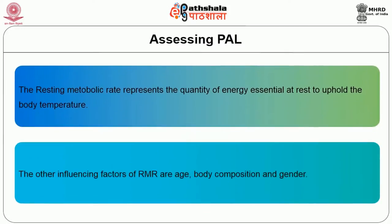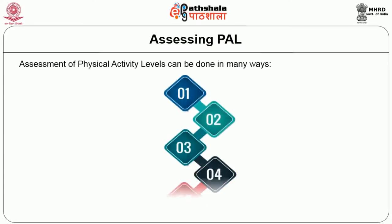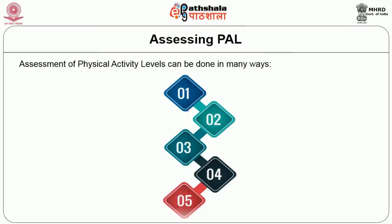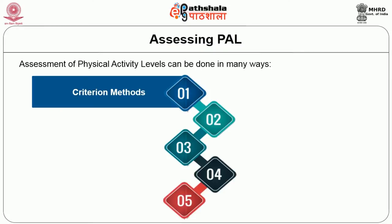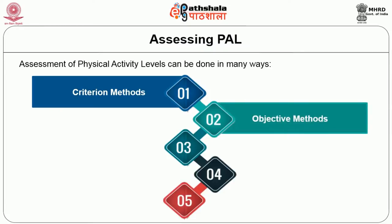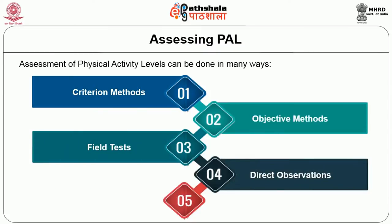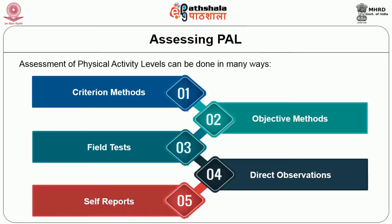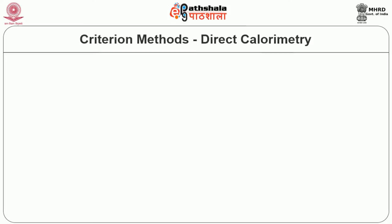The resting metabolic rate represents the quantity of energy essential at rest to maintain body temperature. Influencing factors for RMR include age, body composition, and gender. The methods that can be used to assess physical activity levels are: the criterion method, objective methods, field tests, direct observations, and self-questionnaires or reports.